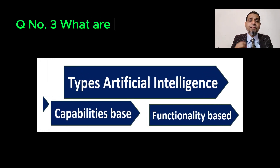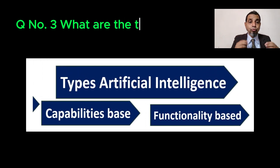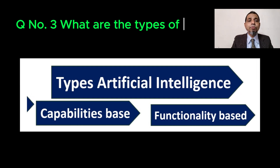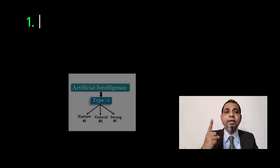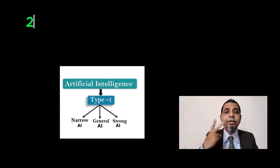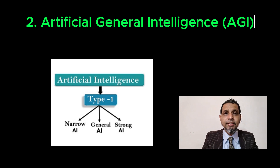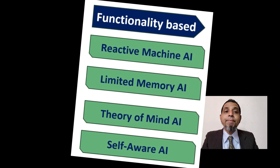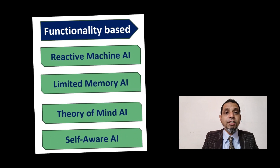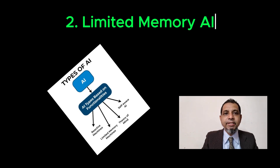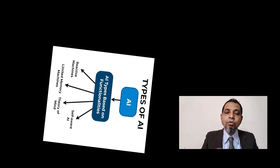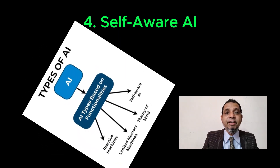Artificial intelligence is divided into two classification types. Type number one: types of AI on the basis of capability, which fall into three sub-types — artificial narrow intelligence, artificial general intelligence, and artificial super intelligence. Type number two: types of AI on the basis of functionalities — reactive machine AI, limited memory AI, theory of mind AI, and self-aware AI.